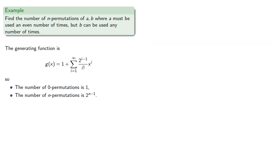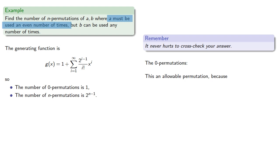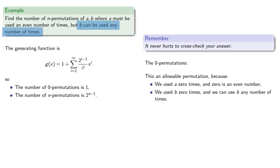And it never hurts to check your answer, so let's consider these 0 permutations. The 0 permutations are nothing at all, and this is actually an allowable permutation. We had to use a an even number of times, and in fact we used a 0 times, and 0 is an even number. And we used b 0 times, and we could have used b any number of times.